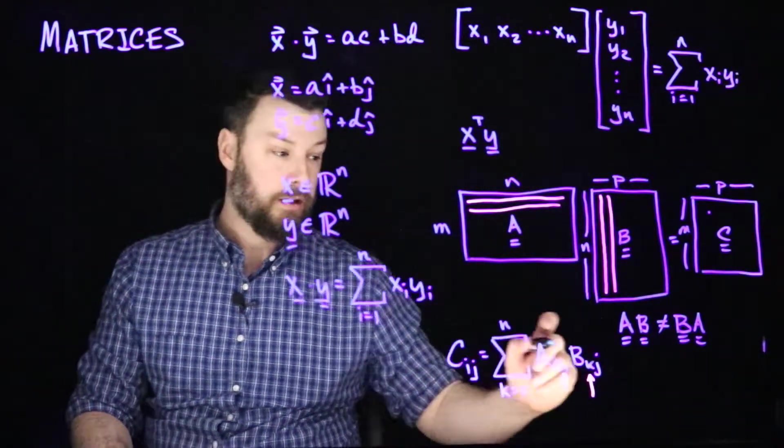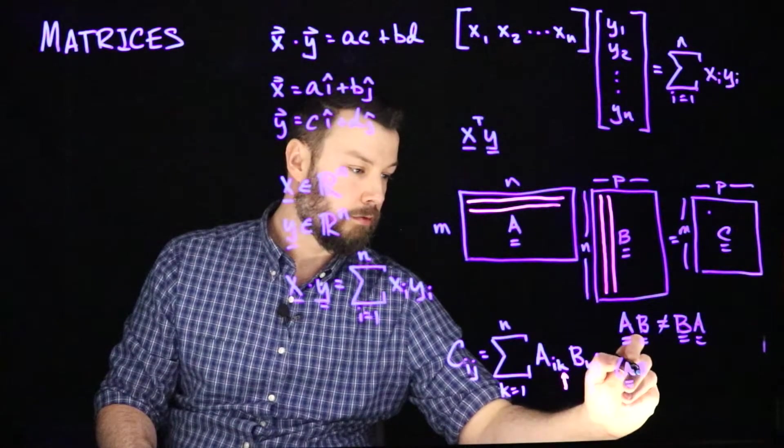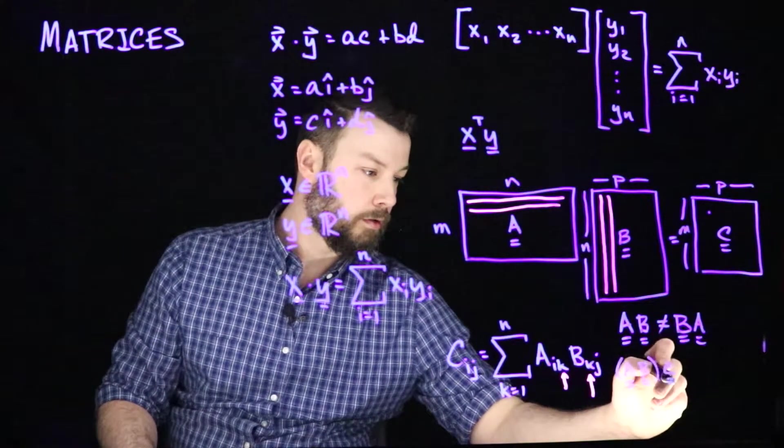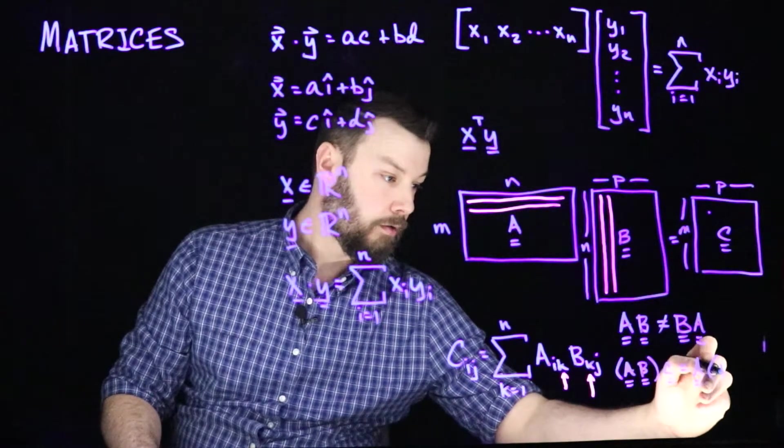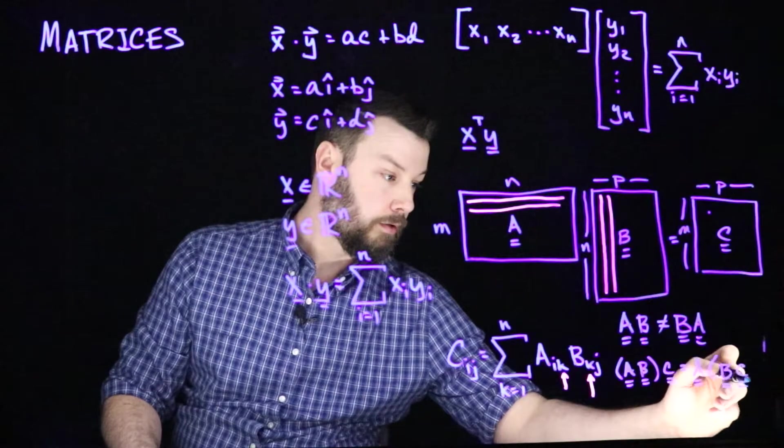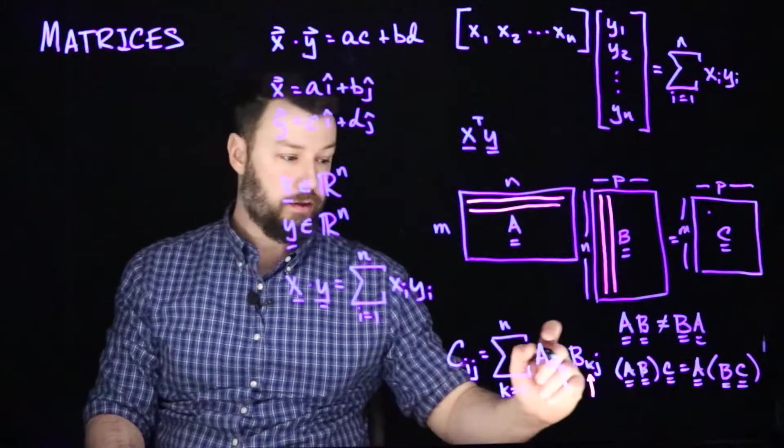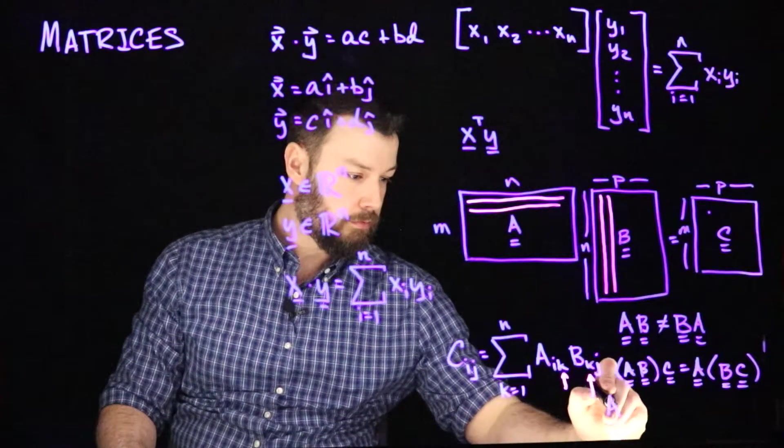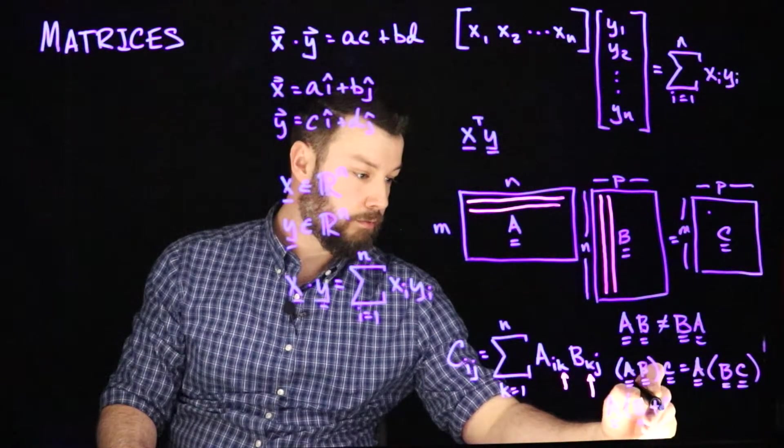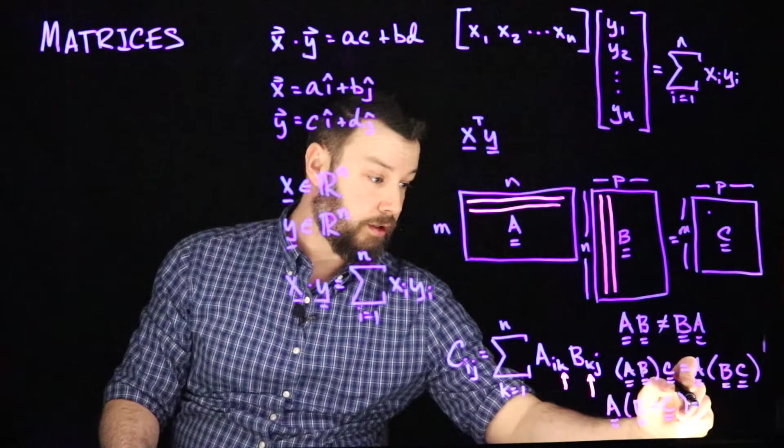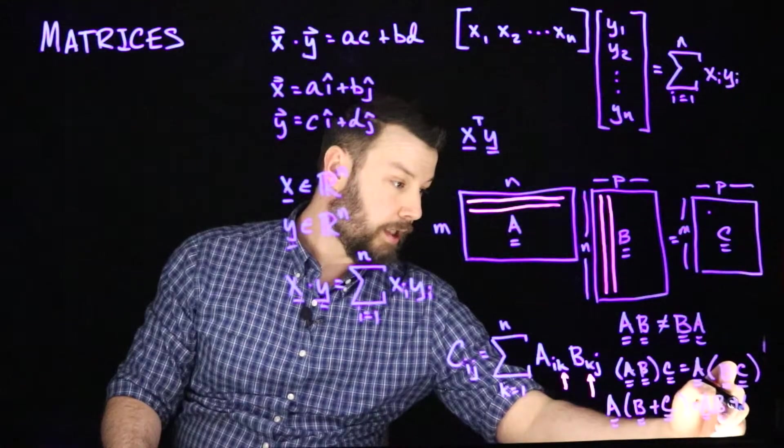However, matrix multiplication is associative. So if I have AB multiplied by C, that does equal A multiplied by the quantity B multiplied by C. Matrix multiplication is also distributive. So if I have A multiplied by the quantity B plus C, then that does equal AB plus AC.